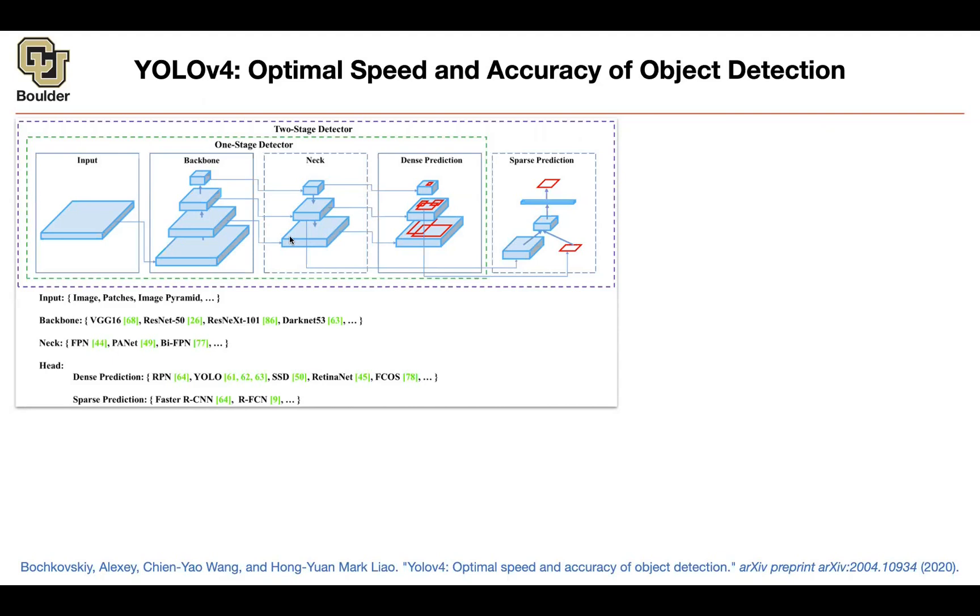And in that case, you have something like FCOS, which are anchor-free. YOLO, SSD, RetinaNet, all of them belong to this category of dense predictions. And it's dense because you are doing dense predictions per each pixel of your feature maps at different layers.